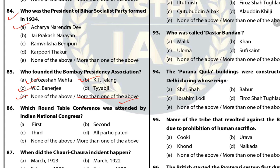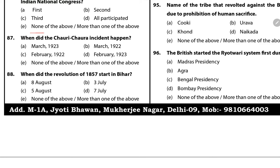Question 86: Which roundtable conference was attended by the Indian National Congress? The answer is B — 2nd. Gandhiji was the representative at the 2nd Roundtable Conference. Question 87: When did the Chauri Chaura incident happen? The answer is C — 5 February 1922.